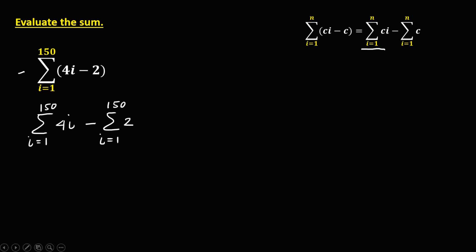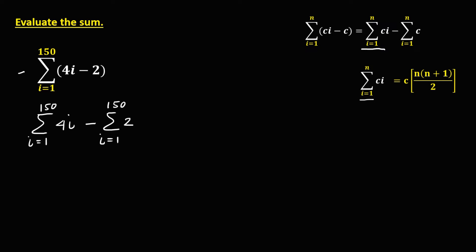To simplify: for the summation of a constant times I, as I starts from 1, this notation is equal to the constant times N times (N plus 1) over 2. So for this notation, the constant is 4, then times N, where N is 150, then times N plus 1, which is 151, then over 2.